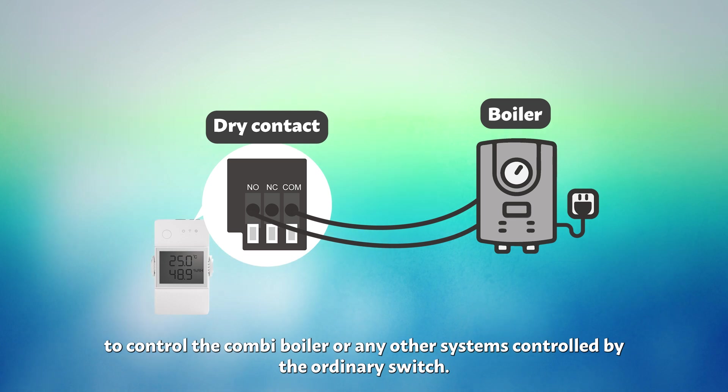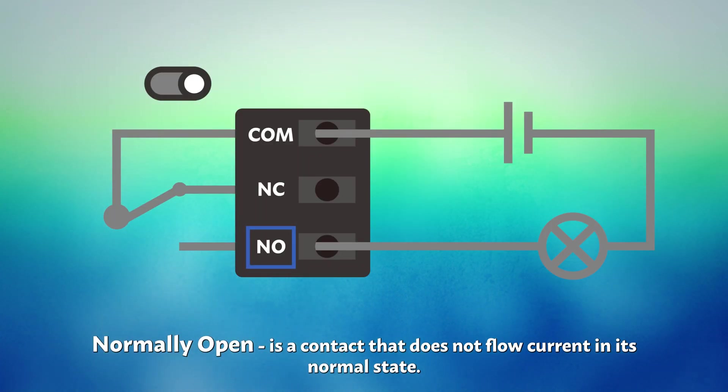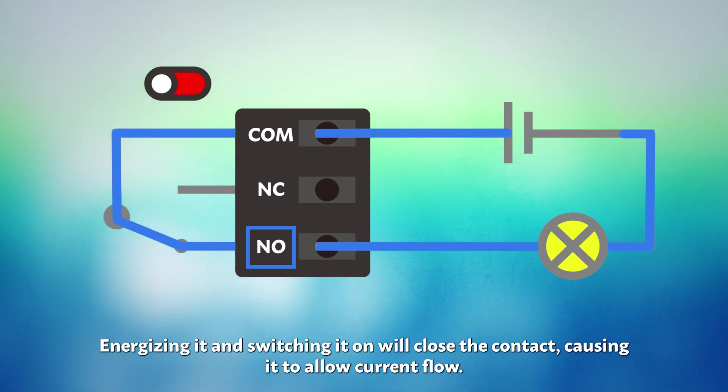Normally open and normally closed. Normally open is a contact that does not flow current in its normal state. Energizing it and switching it on will close the contact, causing it to allow current flow.